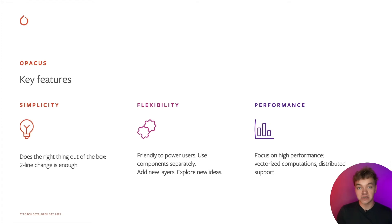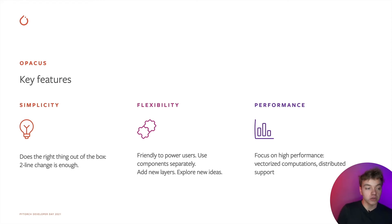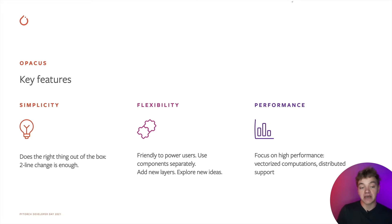The second principle is flexibility. We aim to support researchers who might do novel research or explore new ideas, so Opacus is designed to be extensible and flexible, giving you the ability to use custom code to support non-standard use cases. Opacus components are modular, so you can use different parts of the algorithm independently. The third principle is performance. We know that with a naive implementation, training with DP can have a major impact on training speed, so we strive to minimize that impact by performing vectorized computations to better utilize GPU parallelism and also support distributed training.